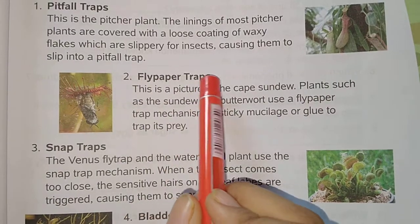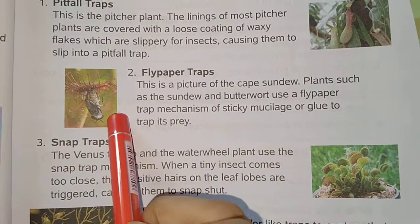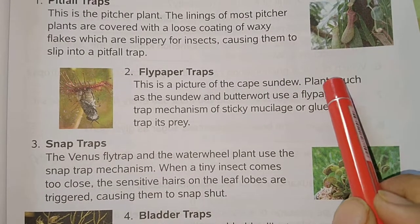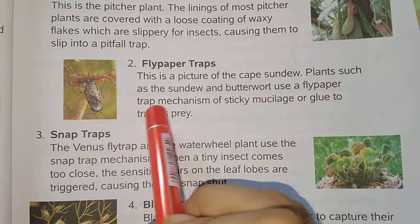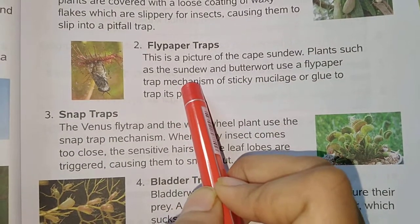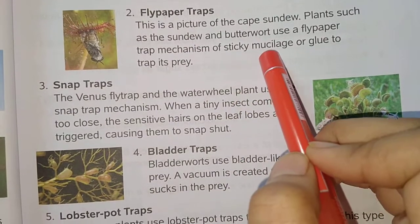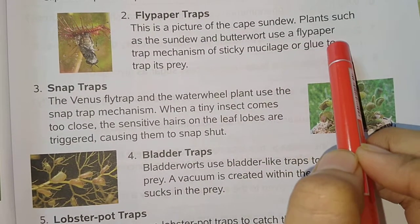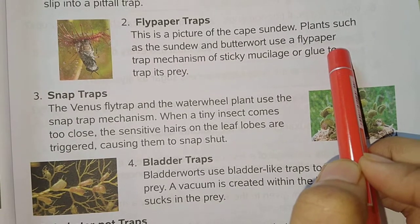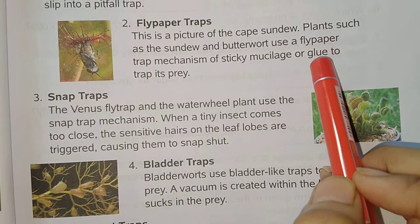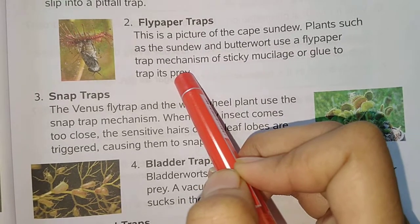Next we will talk about the fly paper trap. This is a picture of Cape Sundew — you can see this from Cape Sundew. Plants such as Sundew and Butterwort use a fly paper trap mechanism. They use a sticky mucilage and glue, which is very sticky. Therefore, the prey gets trapped and the plant absorbs the nutrients.